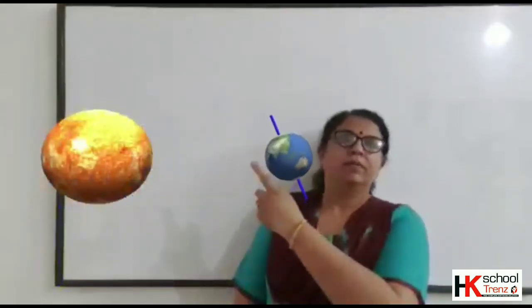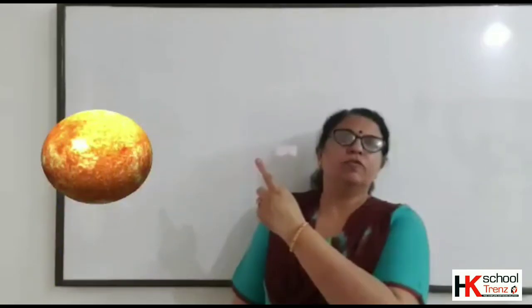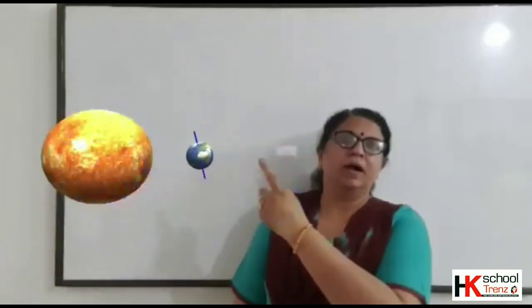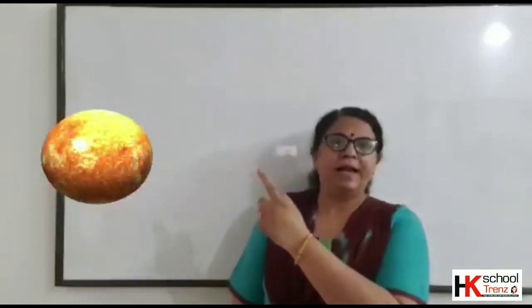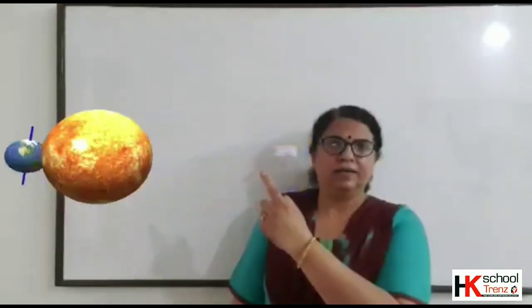This is blue color image which is moving around the sun. It is called earth. It is our planet. We live on earth.